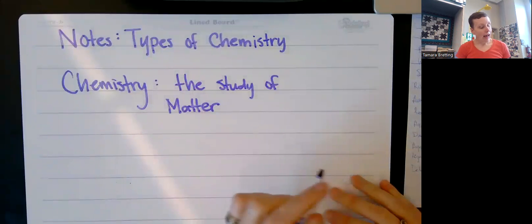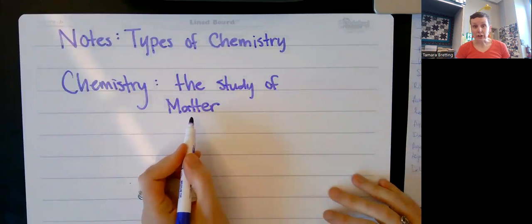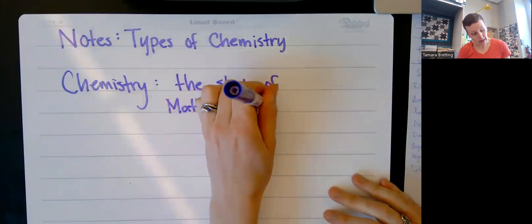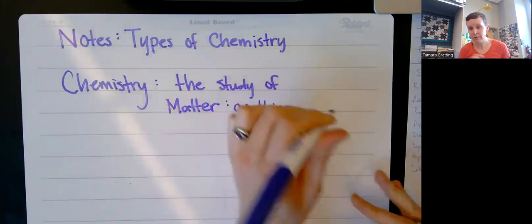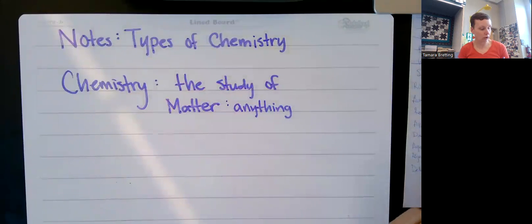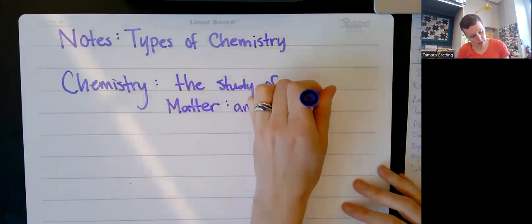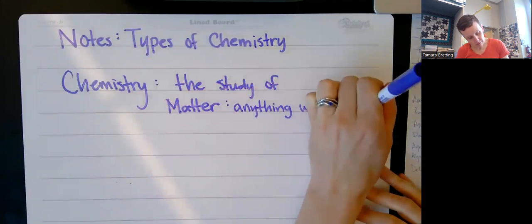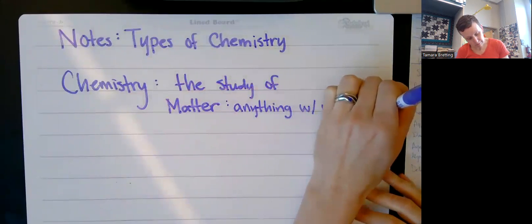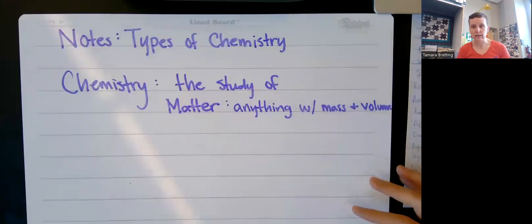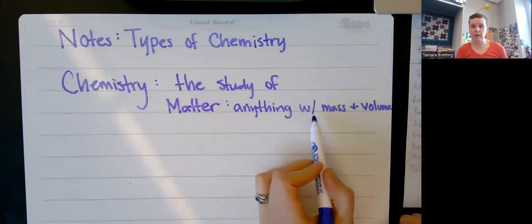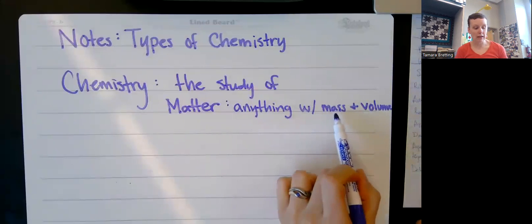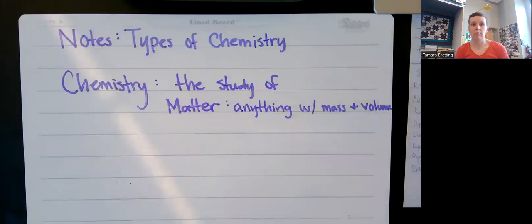So as a refresher on the word matter, matter is anything with mass and volume — has to have both. Anything with mass and volume is considered to be matter.